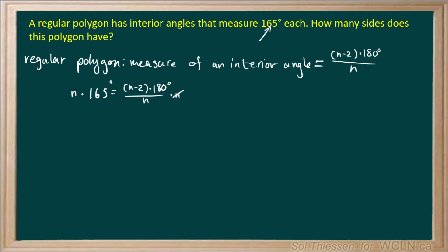So this will cancel the N's on this side, and I'm also going to expand this bracket here by distributing this 180 degrees among both terms. So we'll be left with 165 N equals 180 N minus 360. So that comes from 180 degrees times N minus 2 times 180, which is 360.